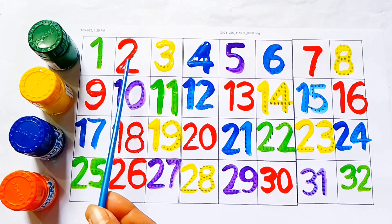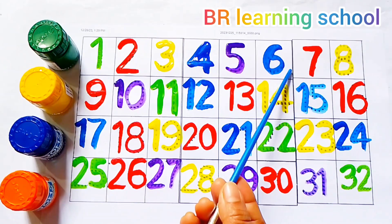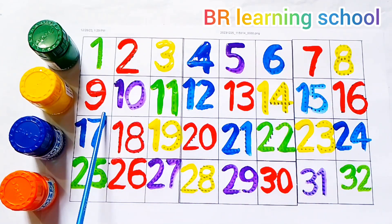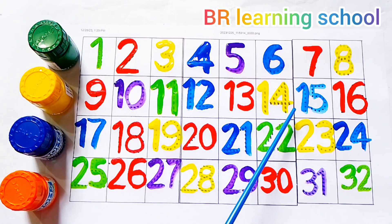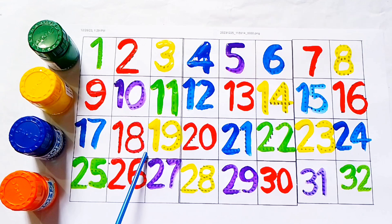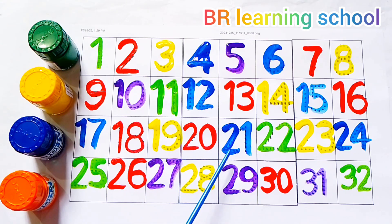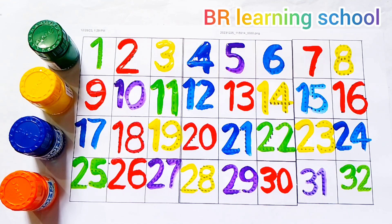1, 2, 3, 4, 5, 6, 7, 8. 9, 10, 11, 12, 13, 14, 15, 16. 17, 18, 19, 20. 20, 21, 22. 23, 24, 25, 26, 27, 28, 29, 30, 31, 32.